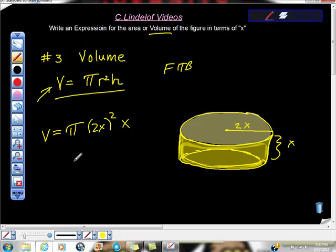Being careful to do our work accurately: exponents are distributed over multiplication, so we have 4x², times this x right here, so 4πx³ is our volume in terms of x. I think we have one more to do here.